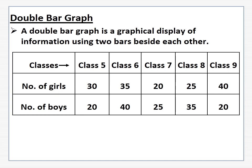Children, you know how to draw a bar graph. Let us understand how to draw a double bar graph. A double bar graph is a graphical display of information using two bars beside each other. It is used to display two sets of related data on the same graph. It helps us to compare more than one kind of information or situation.